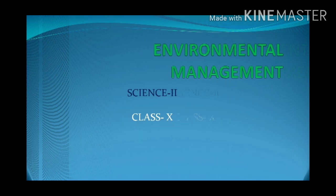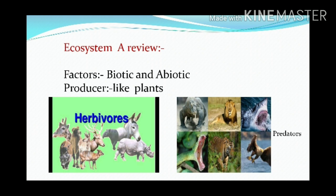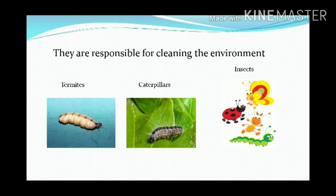Today's topic is environmental management. An ecosystem is formed by biotic and abiotic factors and their interactions with each other, so each factor plays a very important role. Producers like plants are important. Herbivores like deer, goat, sheep, cattle, horses, and camels feeding upon producers are also important. Then predators like lion and tiger, which also prevent the overpopulation of herbivores. Some organisms, though they are dirty, are responsible for cleaning the environment — for example, termites and insects present in dung.